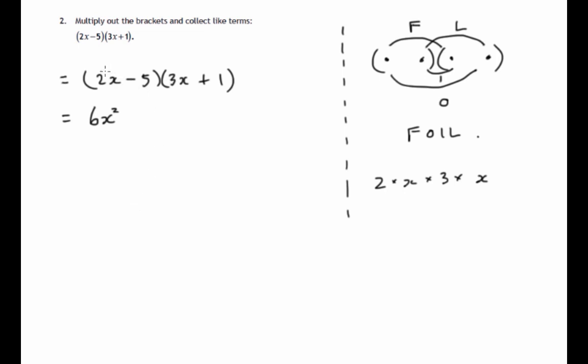The outside two, 2x and a 1. 2x times 1 is just 2x.